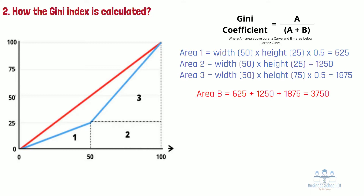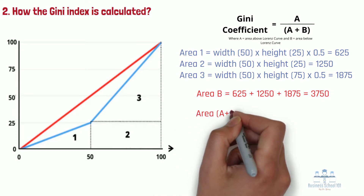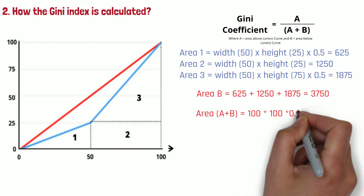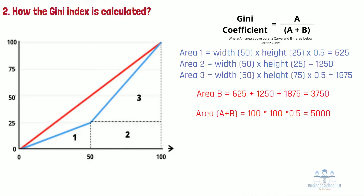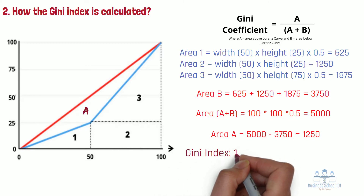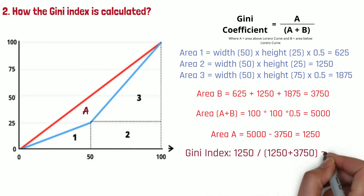We can then work out the area of A. The total area of the triangle under the line of equality equals 100 times 100 times 0.5, which gives us 5000. This is the total area including both A and B. We already have the area of B at 3750, so the area of A is the difference: 1250. Plugging those figures into the formula: Gini coefficient equals 1250 divided by (1250 plus 3750), which equals 0.25.